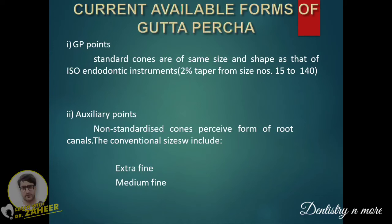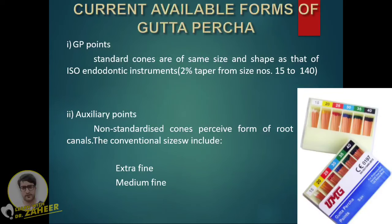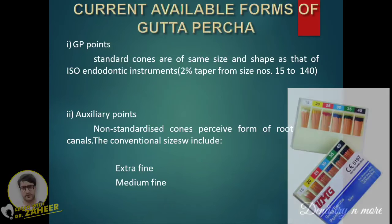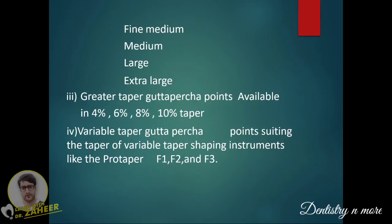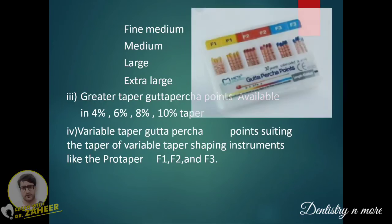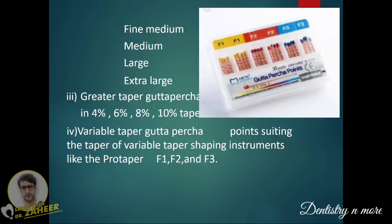Current available forms of gutta percha: Standard cones are the same size and shape as ISO endodontic instruments, with 2% taper from size 15 to 140. Auxiliary points are non-standardized cones for C-form root canals; conventional sizes include extra fine, fine-fine, fine-medium, medium, medium-large, and extra large. Greater taper points are available in 4%, 6%, 8%, and 10% taper. There are also variable-taper points matching instruments like ProTaper, available in F1, F2, and F3 sizes.